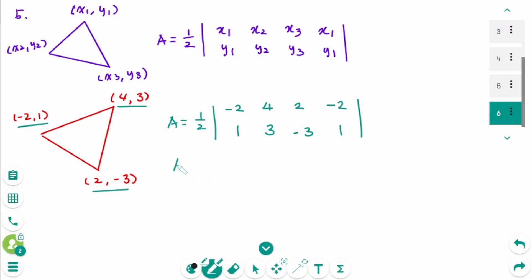Then area equals 1 over 2 times, open the absolute value sign, multiply diagonally. Minus 2 times 3, plus 4 times minus 3, plus 2 times 1.